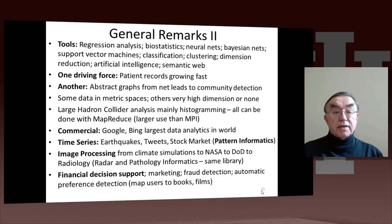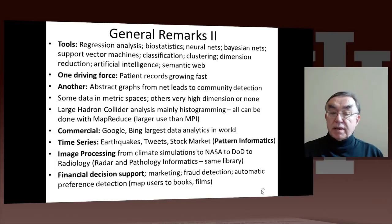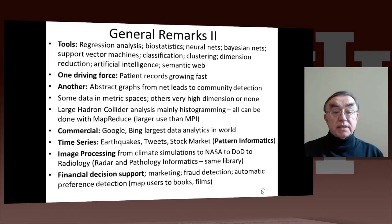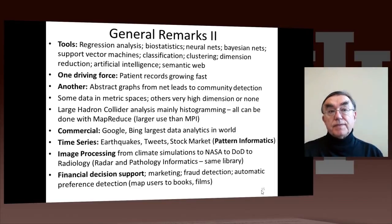Here's a particular example: there are 70 petabytes of medical imagery, and one of the drivers of this field is patient records. Another is the study of social networks, such as the abstract graphs from the Internet, whether linking sites or people together. Some data can be thought of as vectors — they live in spaces and have distances; some are high-dimensional. Some don't live in metric spaces at all. A good example of the latter is gene sequences, where each sequence usually has a different number of members and there is no natural vector space to view them all in.